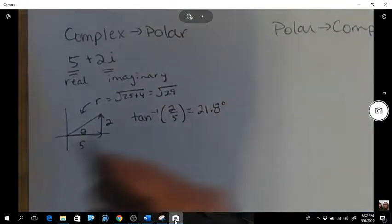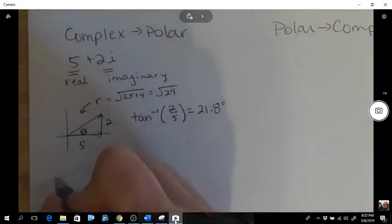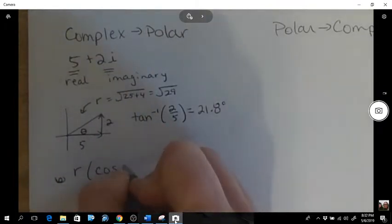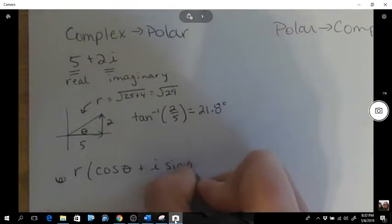So how you're going to express this is you're going to go... Actually, I'll write this out as a general form first: r cos angle plus i sine of angle.